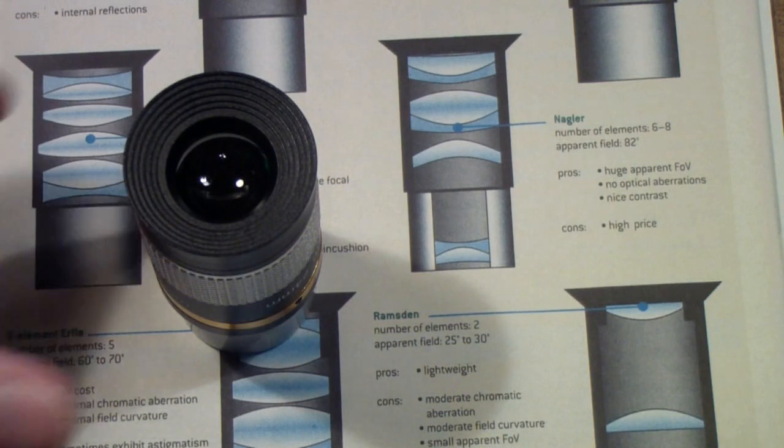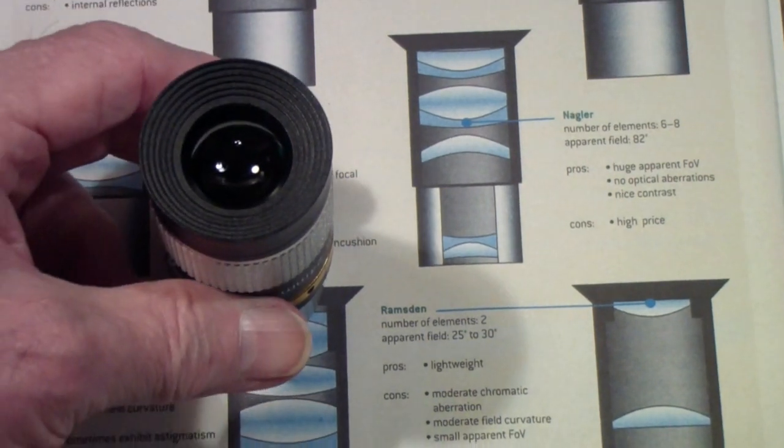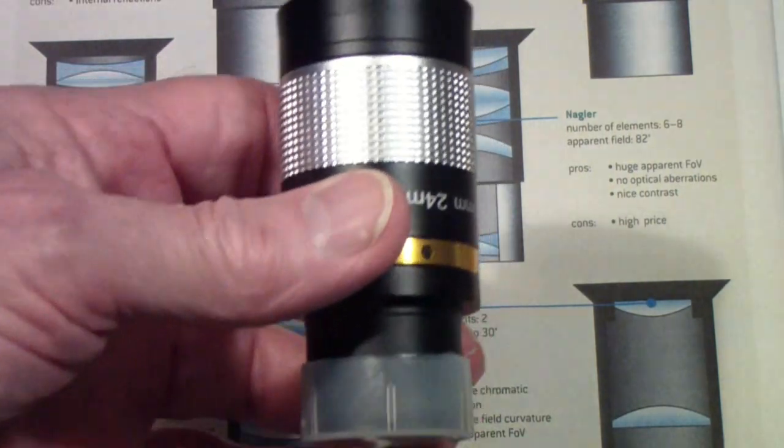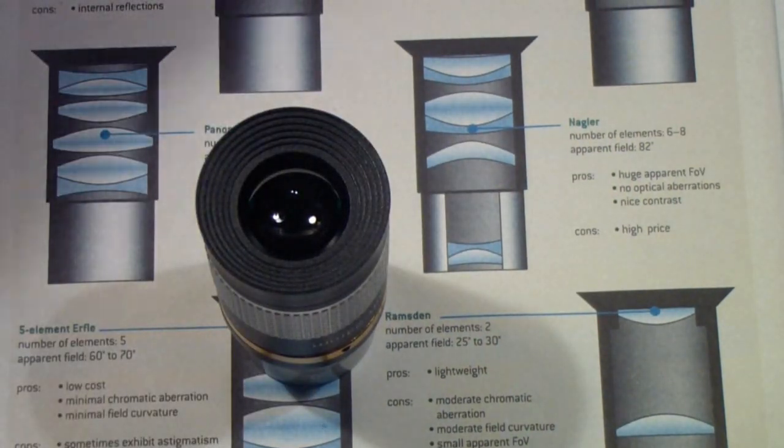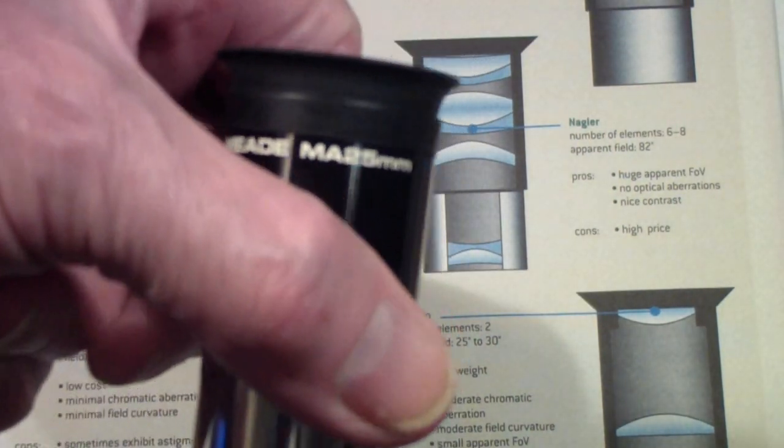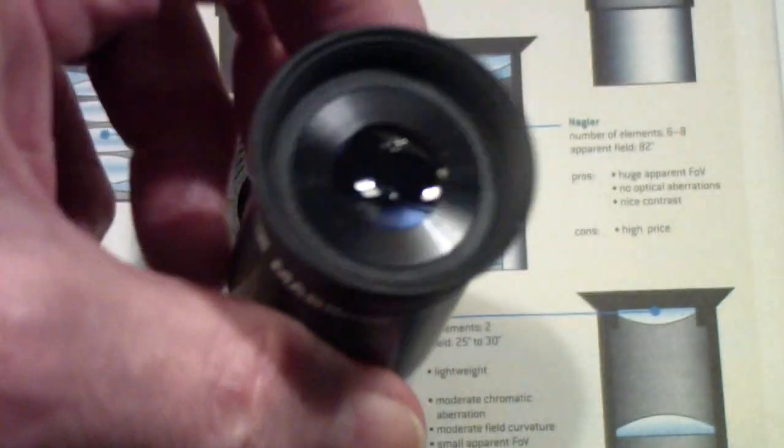This eyepiece, the MA-25, is a fixed focal length lens, and most of them are.